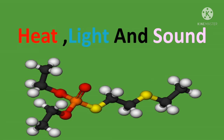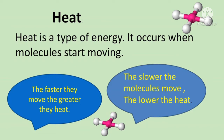So what is heat? Heat is a type of energy. It occurs when molecules start moving. The faster the molecules move, the greater the heat, and the slower the molecules move, the lower the heat. Heat is the form of energy that is transferred between systems or objects with different temperatures, flowing from a high-temperature system to a low-temperature system. It is also referred to as heat energy or thermal energy.